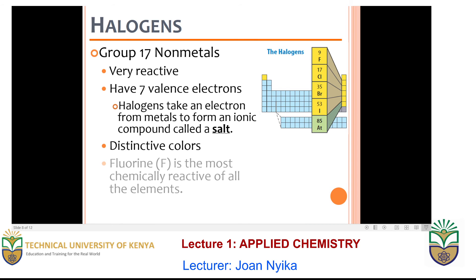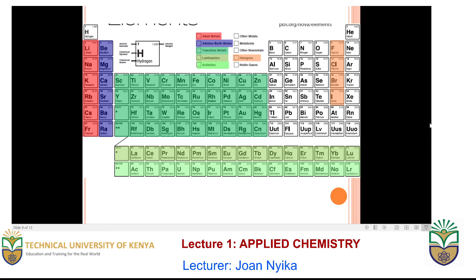The salts formed by group 17 elements have distinctive colors. Chlorine is the most chemically reactive of all the halogens. They are labeled here in orange and include fluorine, chlorine, bromine, and iodine.